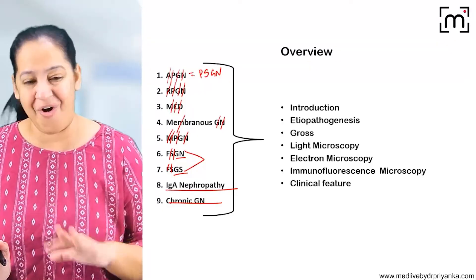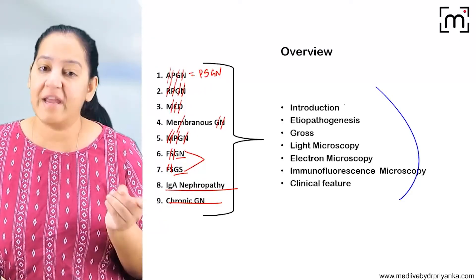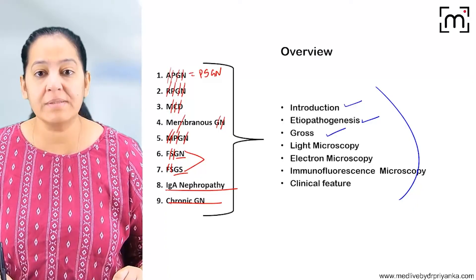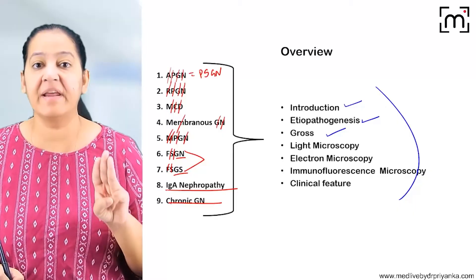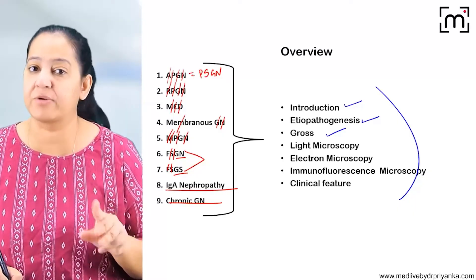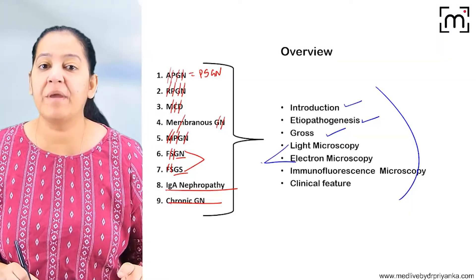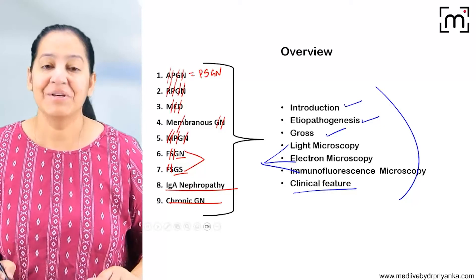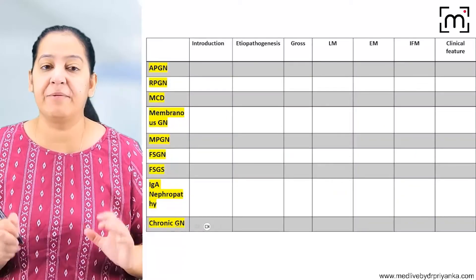We are going to discuss all nine types under a fixed set of headings: introduction, etiopathogenesis, gross appearance, and three types of microscopy. In the renal system and glomerulonephritis, we study light microscopy, electron microscopy, and immunofluorescent microscopy. Finally, we will cover the clinical features and make a comparative table between all nine types.